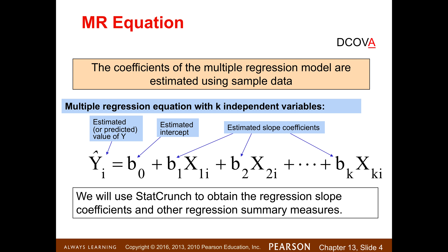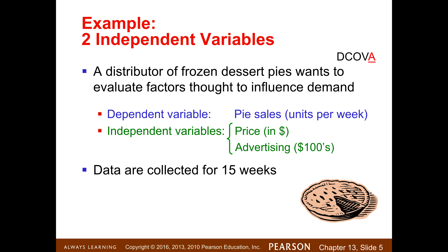If you don't have StatCrunch, the calculation of coefficients for the multiple regression model are actually found using matrix operations — really cool stuff, but not appropriate for this class. So let's dive into an example. I think that's best in an applied statistics course like this one — don't spend time on theory, let's just dive into an example.